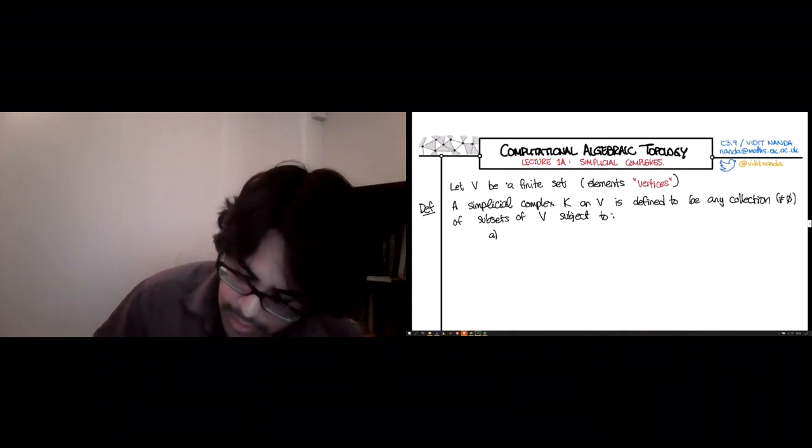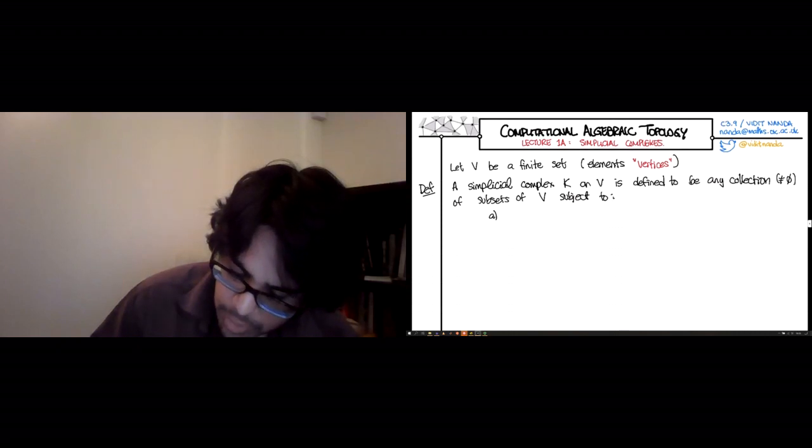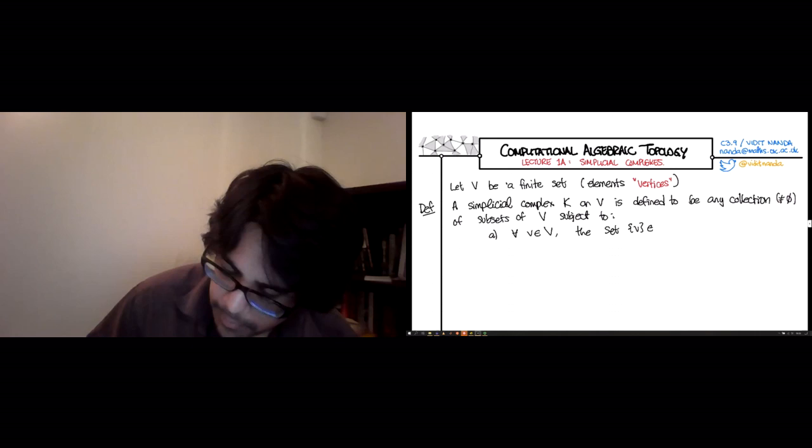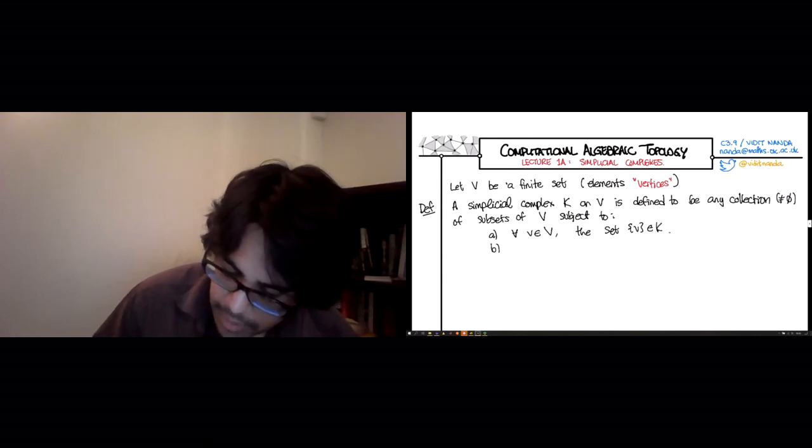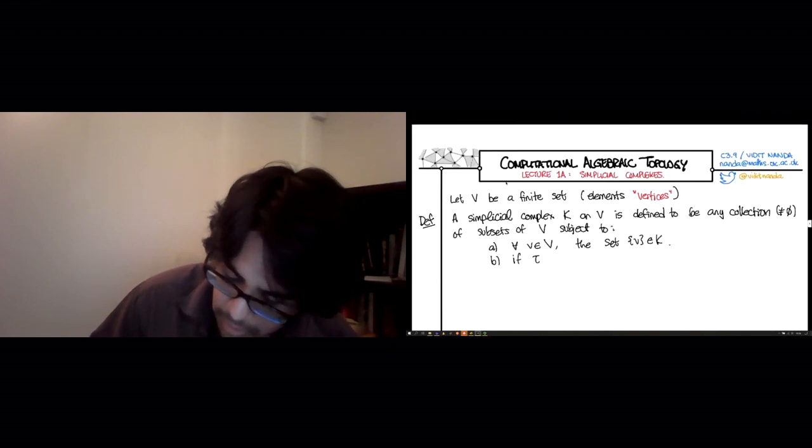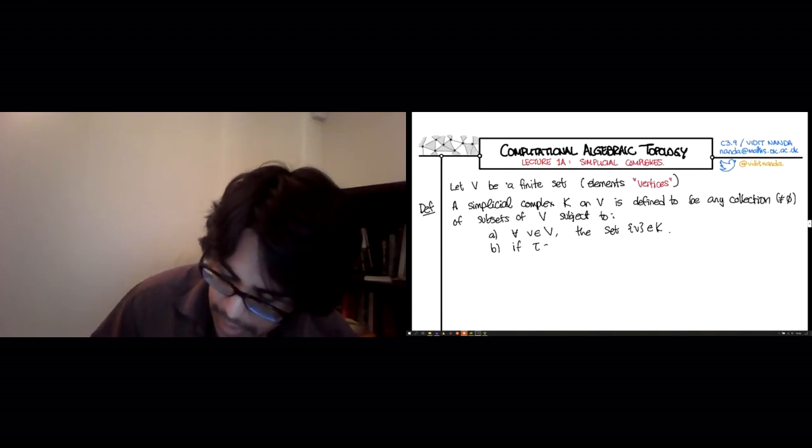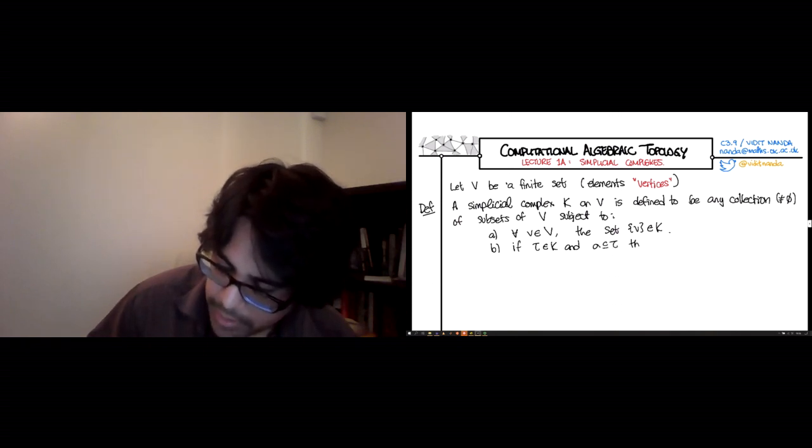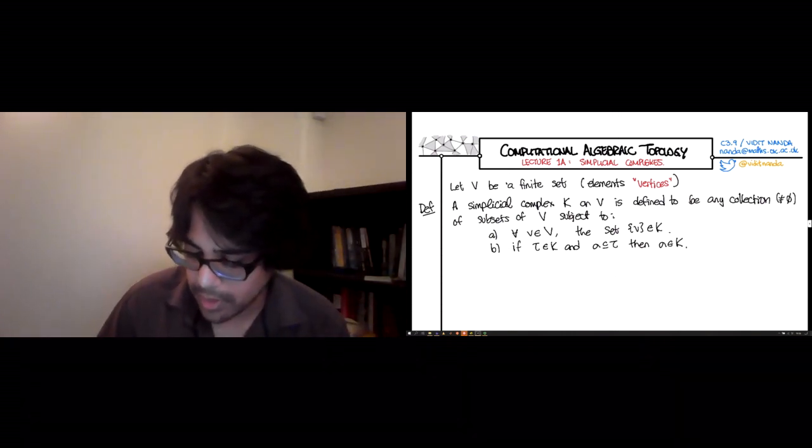The first one is any time you have a single vertex, so for all vertices v in V, the set that just contains that one vertex must lie in K. And the second requirement is that if some subset, let's say tau, lies in K, and we have a smaller set sigma which is contained in tau, then sigma must also lie in K. These two simple rules define a simplicial complex.